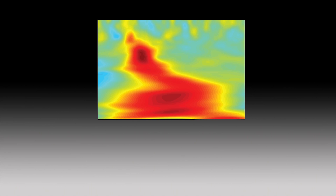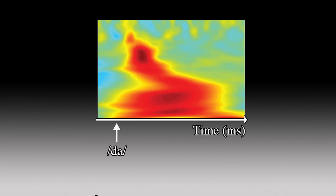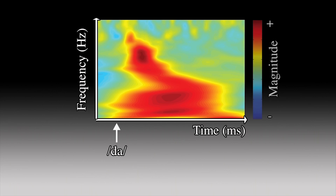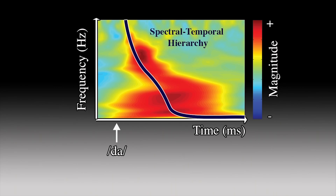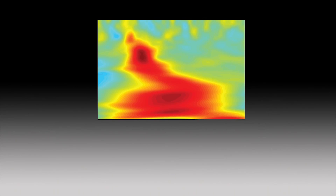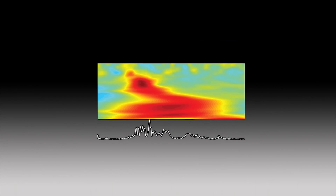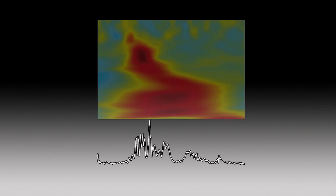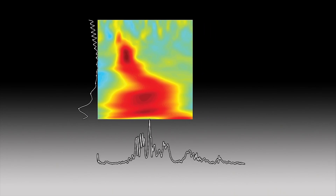In this group average response, we see time represented along the abscissa, or x-axis, and frequency along the ordinate axis. Magnitude is represented by color. The onset of the speech sound is marked by the arrow, and here we can also see a representation of the spectral temporal hierarchy of processing, as shown by this thick blue line. With this data, we can also take the mean across either dimension to find the mean temporal envelope and the mean spectral envelope for each response. These envelopes provide information about where in the time-frequency plane we can filter the responses.